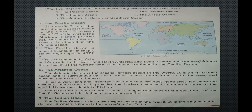The Atlantic Ocean is the second largest ocean in the world. It is S-shaped and is surrounded by North America and South America in the west and Europe and Africa in the east. It has a very long and indented coastline that provides good sites for harbors and seaports. It provides the busiest trade and commerce route to the world. Its average depth is 3,376 meters. The coastline of the Atlantic Ocean is longer than that of the Pacific Ocean and the Indian Ocean put together.